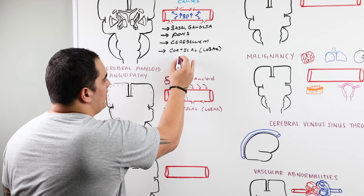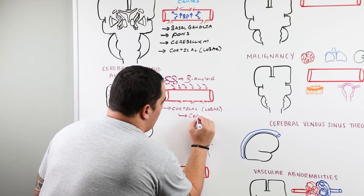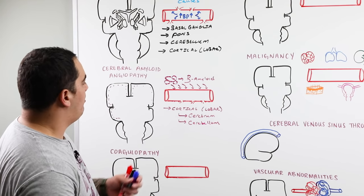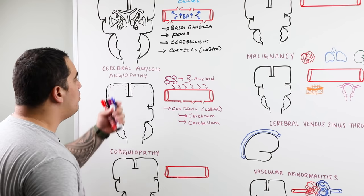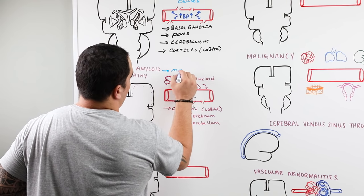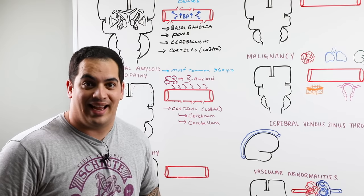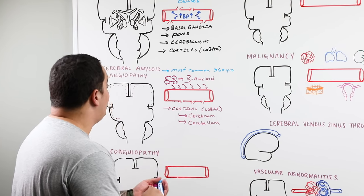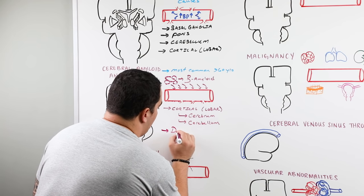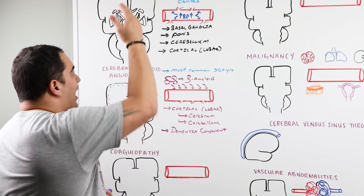Cerebral amyloid angiopathy can occur in the cerebrum and also the cerebellum. This is the most common cause of ICH in patients greater than 60 years of age, especially with a previous history of ICH, and there is also a dementia component associated with this condition.